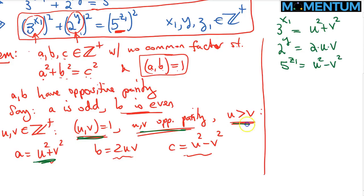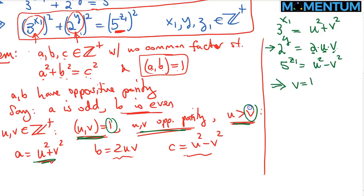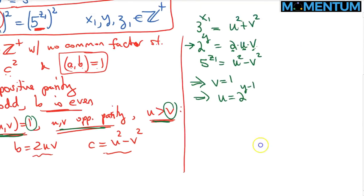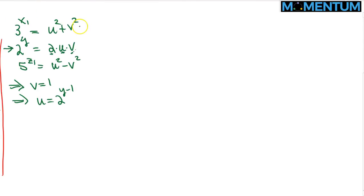Now let's think about what U and V can be. Since U and V are relatively prime and 2·U·V = 2^y, both U and V must be powers of 2. But they must be relatively prime, so the only possibility is that V = 1 (the smaller one), giving U = 2^(y−1).